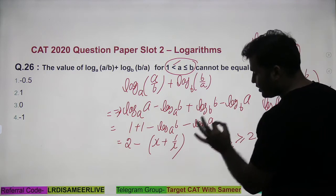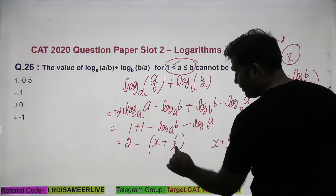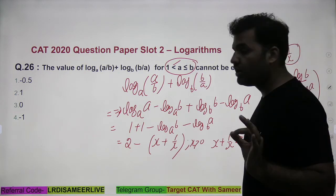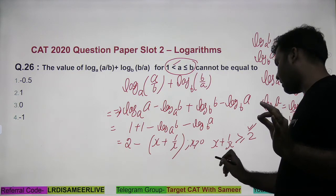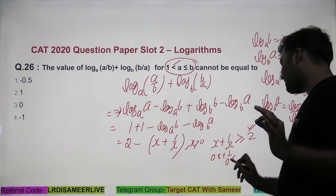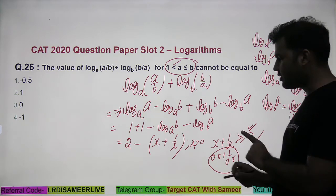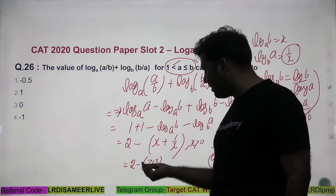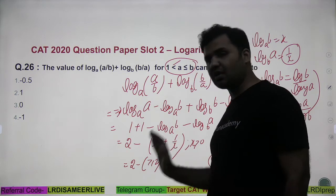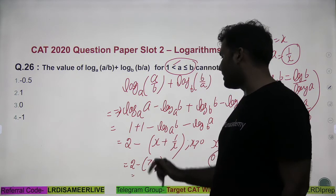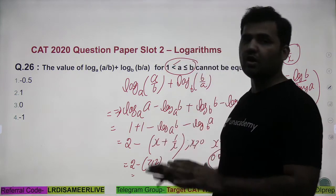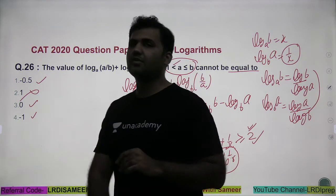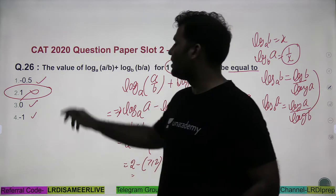If x is greater than 0, then x plus 1/x will definitely be greater than or equal to 2 — that's a standard rule in algebra. For example, putting x as 0.5 gives 0.5 + 2 = 2.5. So when I subtract something greater than or equal to 2 from 2, I get a result that is less than or equal to 0. This expression can never be positive — it can be zero or negative. So the value it cannot equal is a positive number, making the second option the correct answer.